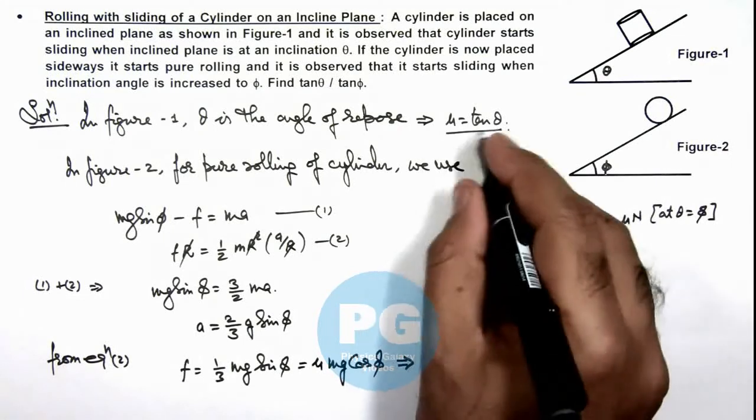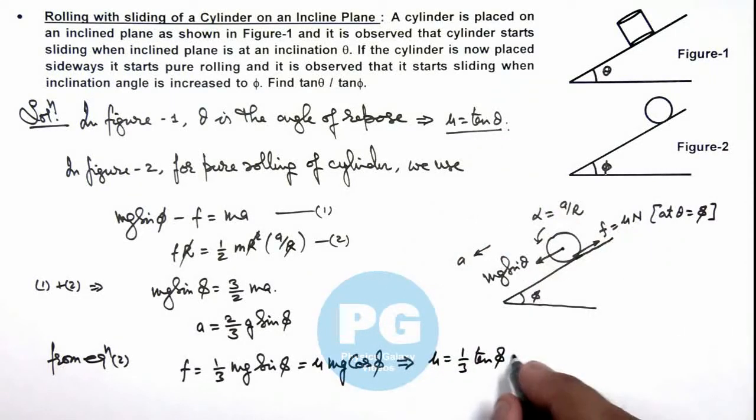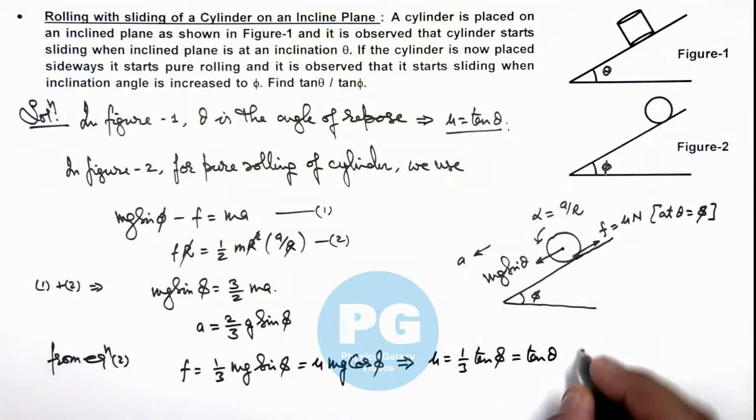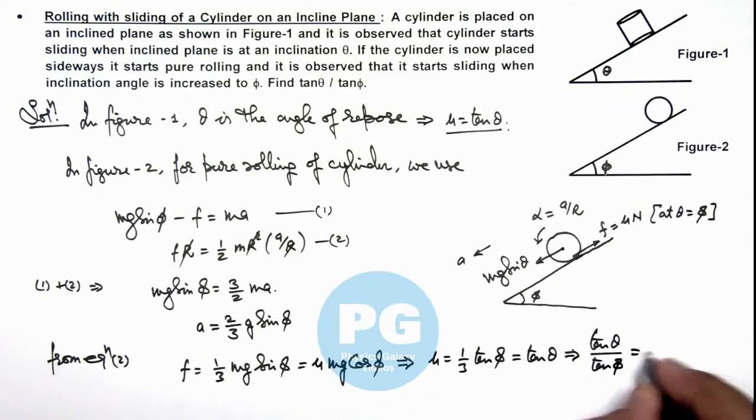And here we are having the value of mu as tan theta. This implies we'll get the value of tan theta upon tan phi is equal to 1 by 3. That is the result of this problem.